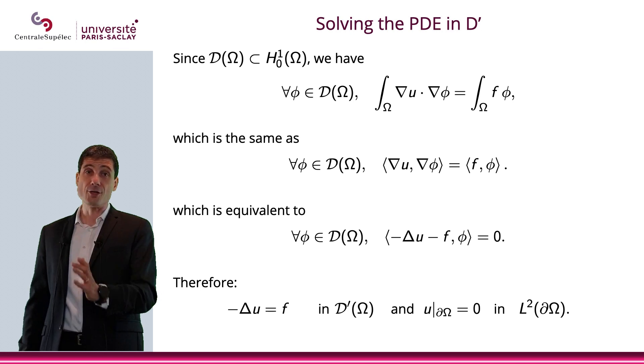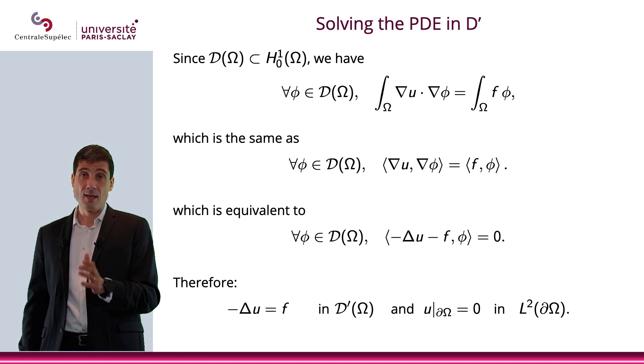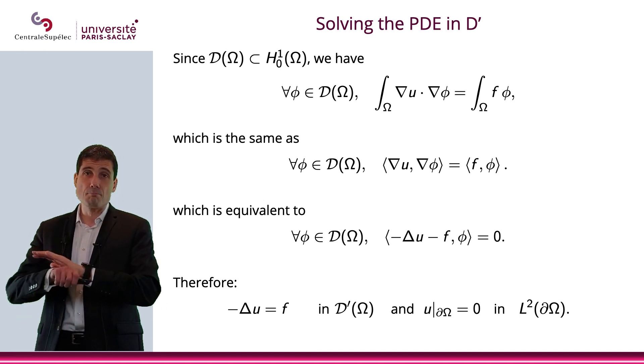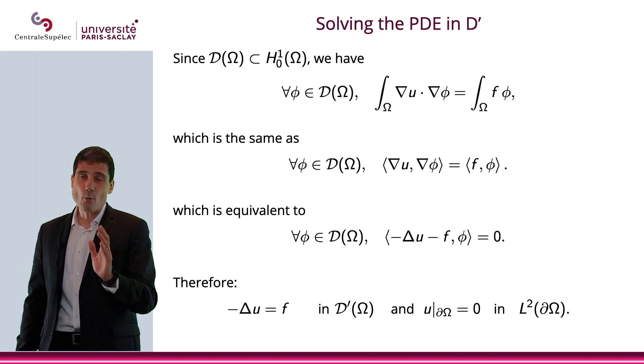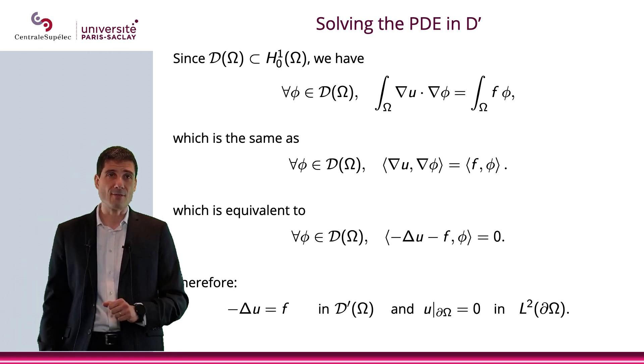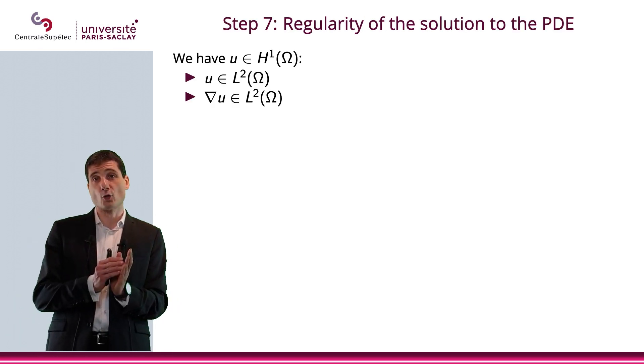Since that is true for all phi, that means minus Laplace u minus f equals 0. In other words, minus Laplace u equals f in D', and u equals 0 on the boundary. Everything worked pretty much the same until now.